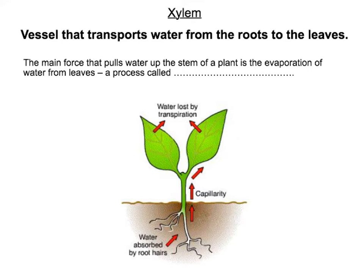Once in the leaves, the water is lost through the stomata by a process called transpiration — evaporation through the stomata is transpiration. It's actually that water being lost that pulls the water up the plant.